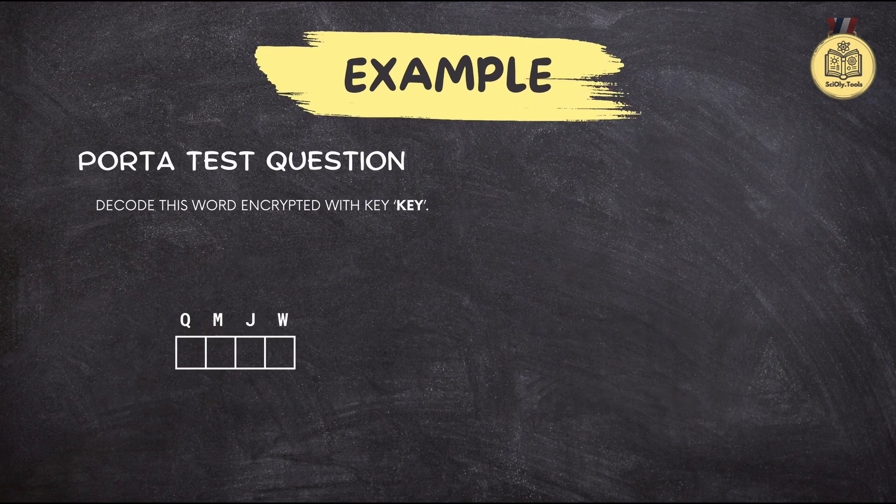Makes sense — sounds straightforward. There's no better way to learn than by doing. Let's say we have the ciphertext QMJW and our secret keyword is KEY.